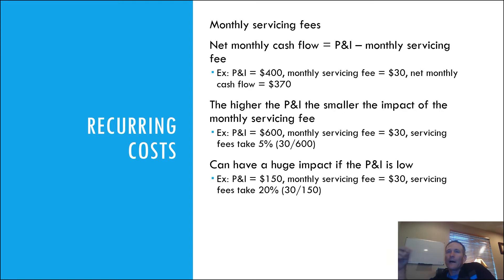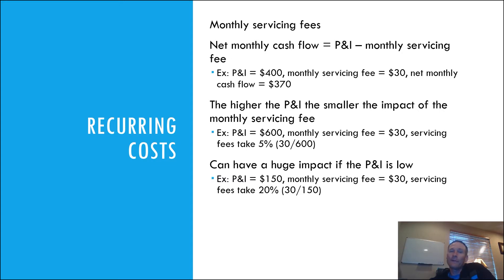A big factor to consider is the amount of P&I relative to the servicing fee. If your P&I is $600 and you're paying $30 a month for servicing, those monthly servicing fees are taking about 5%, which is not nothing but not too bad. But I see a lot of loans with low P&I — if your P&I is $150 and you're paying $30 for servicing, you're losing 20% of your income just on servicing costs. So all things being equal, what I'm willing to pay for a loan with 5% servicing ratio versus 20% is going to be quite different.